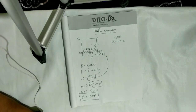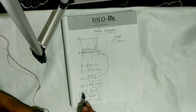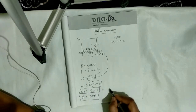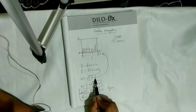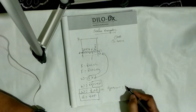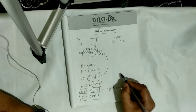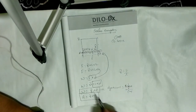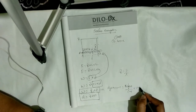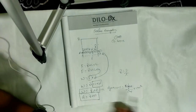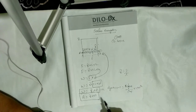Now let's verify this equation using units. Work done has units of dynes × centimeter. Surface tension has units of force per unit length, which is dynes per centimeter. Change in area has units of centimeter squared. So surface tension × area gives dynes/cm × cm² = dynes × cm, which matches work done. Left-hand side equals right-hand side, confirming this equation is correct. This is called surface energetics.